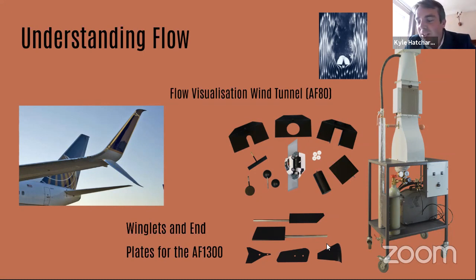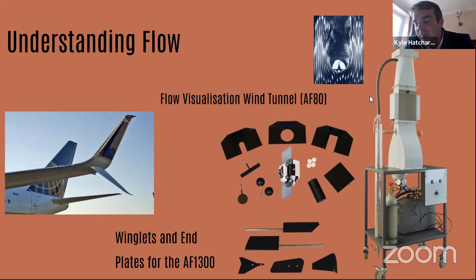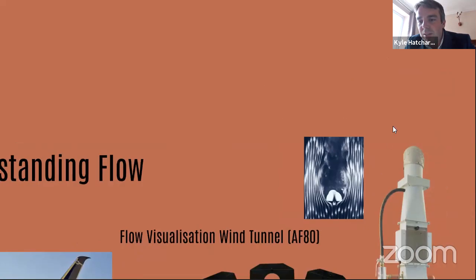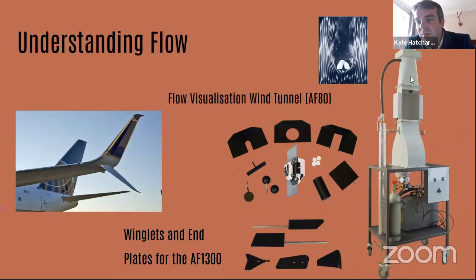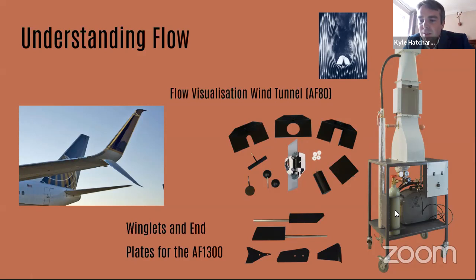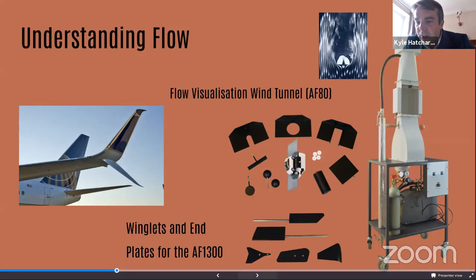There's also the fluid flow visualization for the AF80. There are multiple ancillaries available with this piece of equipment, allowing students to quite easily visualize how fluid flow is moving around an object and how that turbulent flow, as discussed with winglets, is being created. You can see at the back end of the image the flow starting to turn back in on itself, creating that turbulent flow.